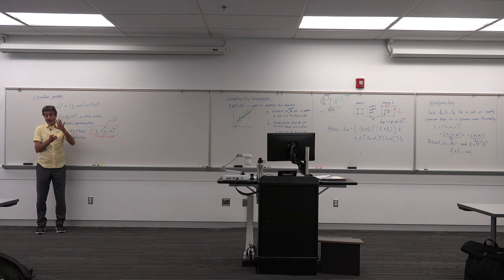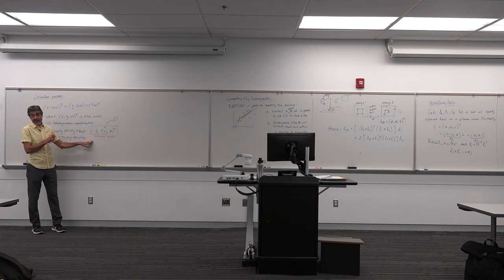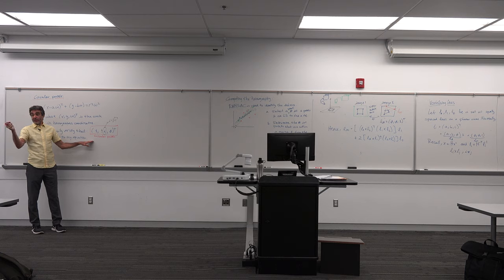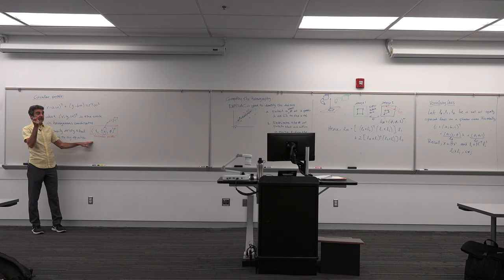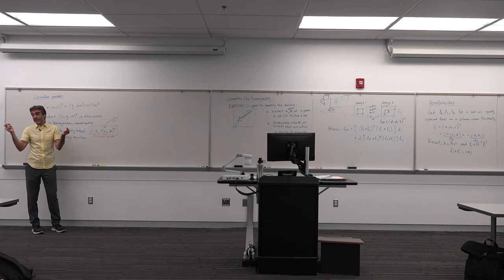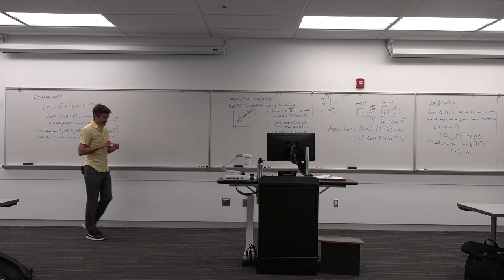We're almost done with the projective space. We just need to see how to use circular points and then extend everything very quickly to P3 — the projective space in three dimensions — which is the space we really want to work in. In P3, everything we've seen stays the same, except the line at infinity becomes the plane at infinity. Everything is equivalent. See you next time.